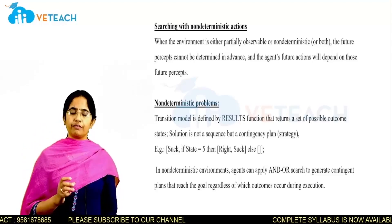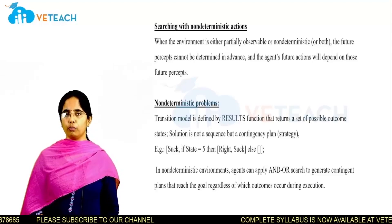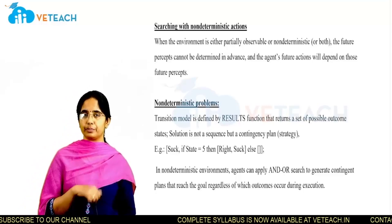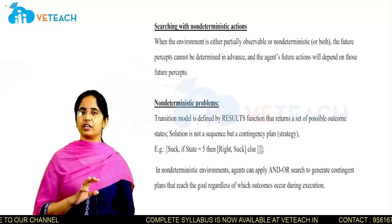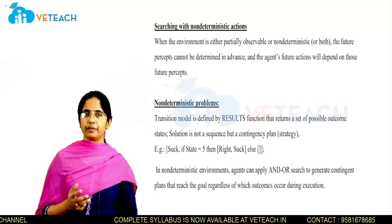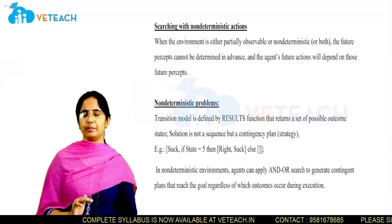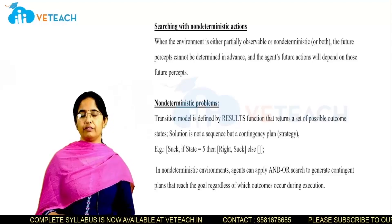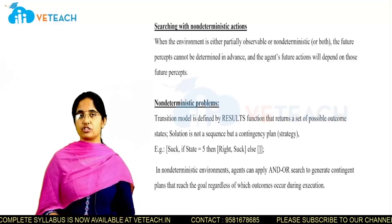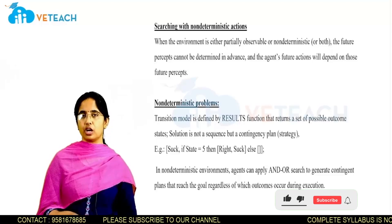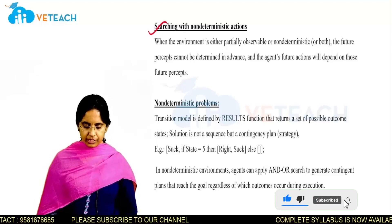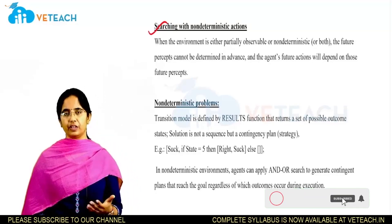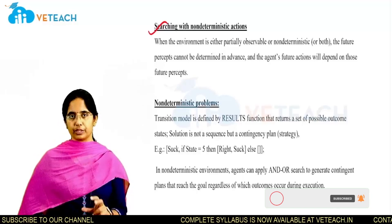A robot or any AI system takes decisions depending upon the input it has perceived. If it doesn't perceive complete information properly, it might take wrong actions or wrong decisions. In this topic, we will perform the searching process based on non-deterministic situations. Non-deterministic action means the machine will not consider what has not been perceived.